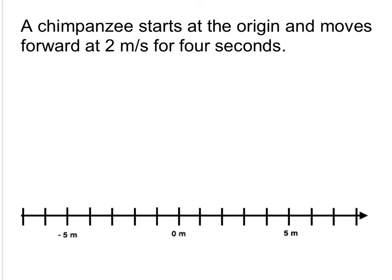A chimpanzee starts at the origin and moves forward at two meters per second for four seconds. For this one, let's start with the first dot—it's at the origin. And you want to tell me that this is where it starts at zero seconds. Now, the problem takes place for four seconds, so I think an appropriate time interval would be delta t is one second, which means that between each dot one second has passed.